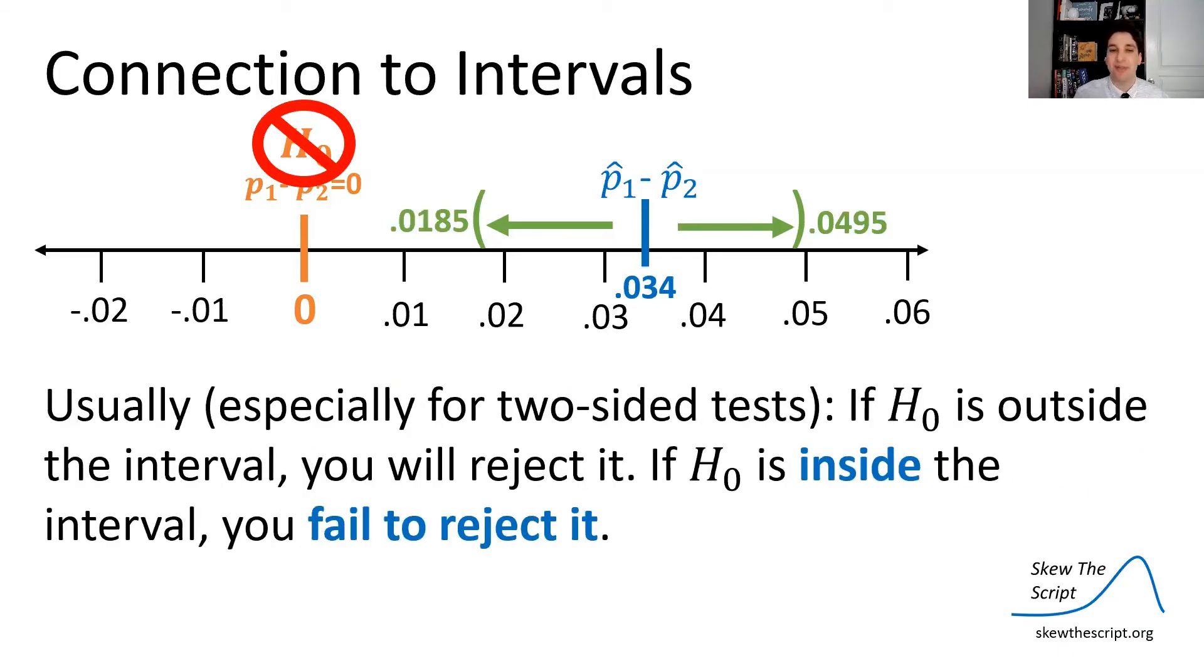And this usually happens, especially for two-sided tests. Not all the time, but usually if the null is outside the interval, in this case, if the value zero is outside the interval, you would reject it. If the null is inside the interval, that means it's a plausible value and you can't necessarily reject it, given the evidence you've got. But in this case, the only plausible values were all higher than zero, meaning all plausible values showed a preference towards a white name resume, so we rejected the null of no discrimination.